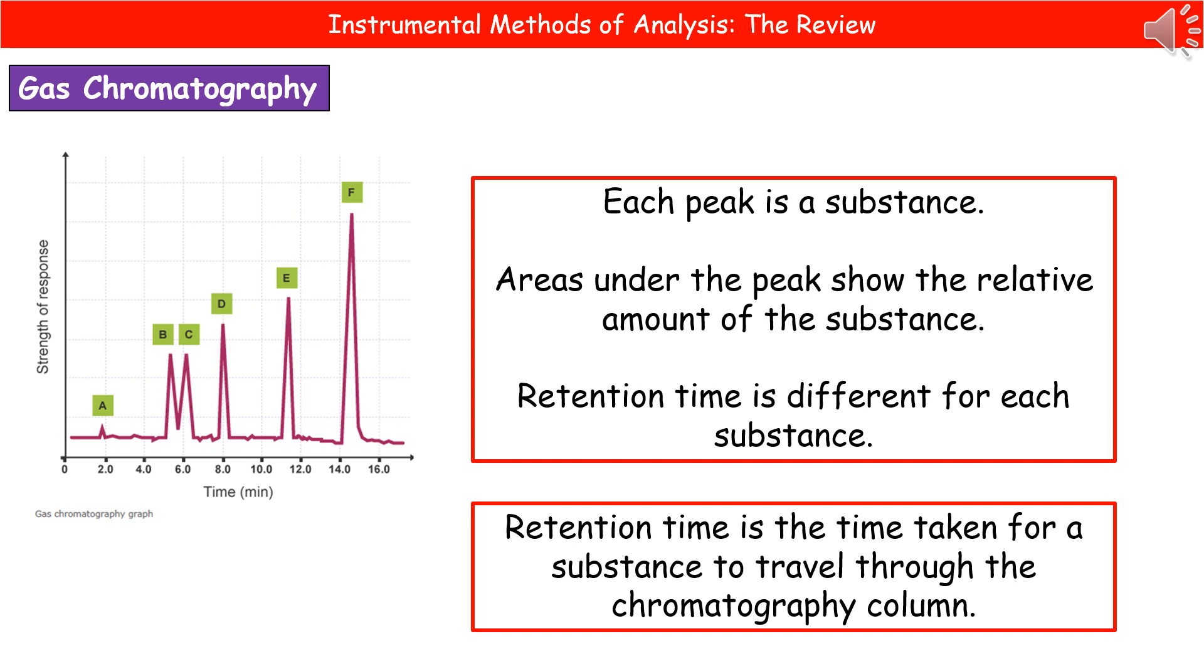What we're going to find is that the smaller substances, those ones that are much smaller molecules and therefore able to get through nice and quickly, their retention time is very low. Whereas the bigger substances, the ones that are going to travel through that column very slowly, they've got the longer retention times.